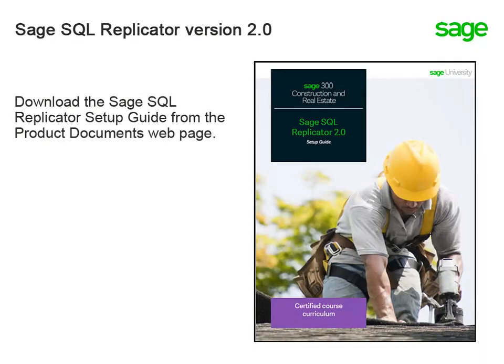The steps for installing Sage SQL Replicator version 2.0, and instructions on how to configure the replication options, replicate the data, and use the monitoring tools are all documented in the Sage SQL Replicator setup guide. Be sure to download this from the product documents website.